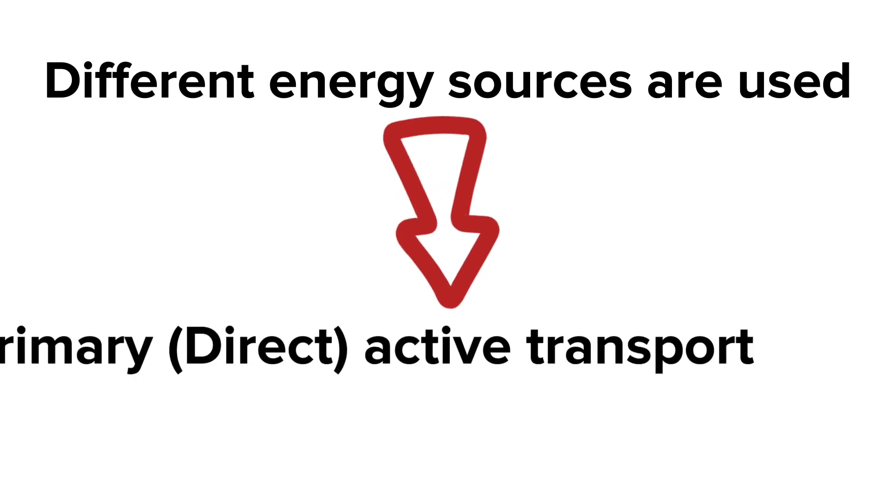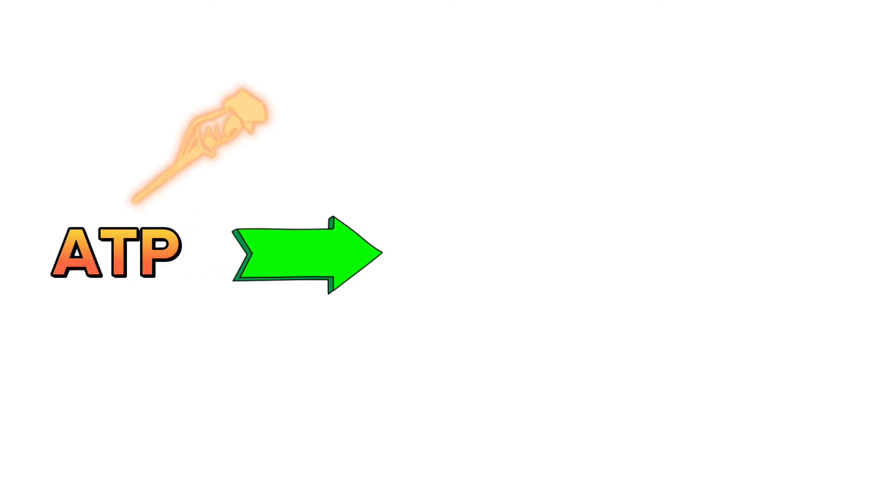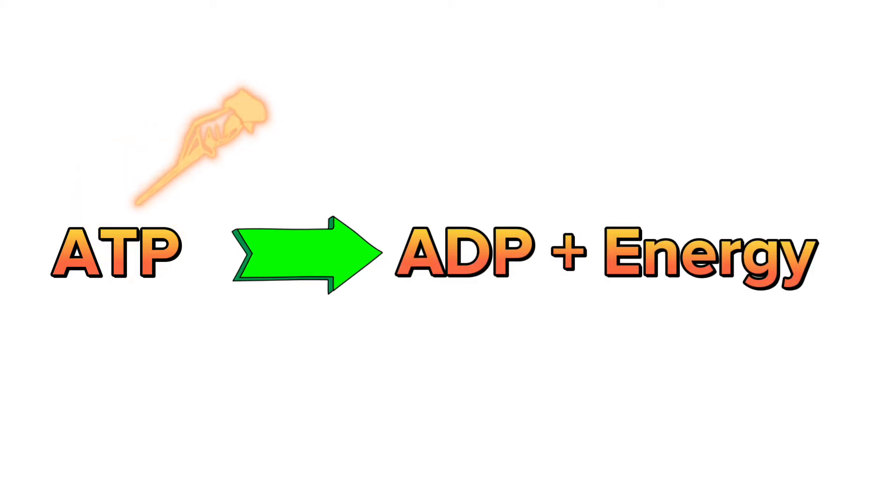The first one is by primary or direct active transport. It involves the hydrolysis of ATP to provide energy, like the sodium-potassium ATPase. But how does it happen?